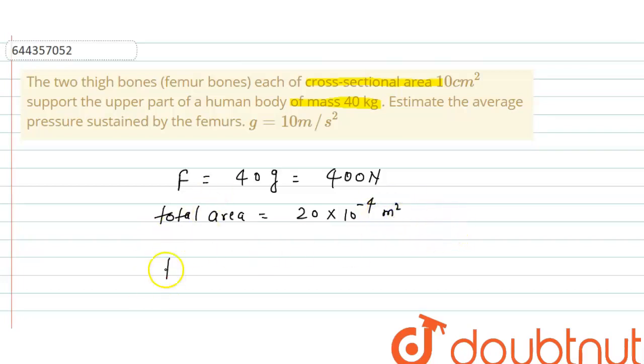So pressure equals force upon total area. Force is 400 newton upon total area 20 into 10 to the power minus 4, so this equals 20 into 10 to the power plus 4 pascal.